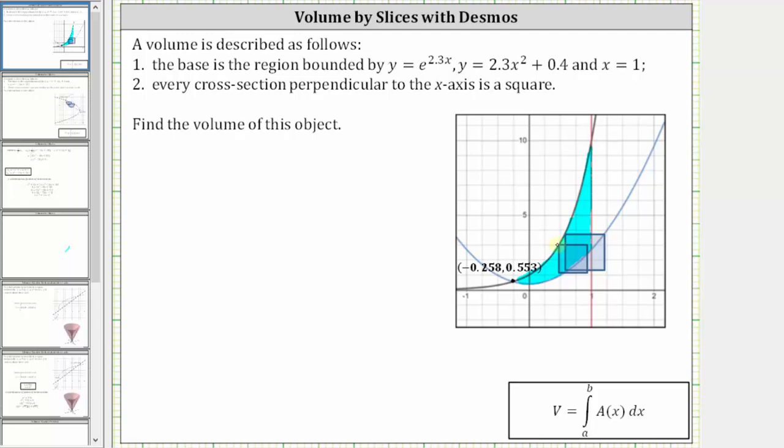Also notice how the bounded region starts on the left when x is approximately negative 0.258, which is the x-coordinate of this point of intersection. This point of intersection is difficult to find algebraically, and therefore I found it graphically using Desmos.com.